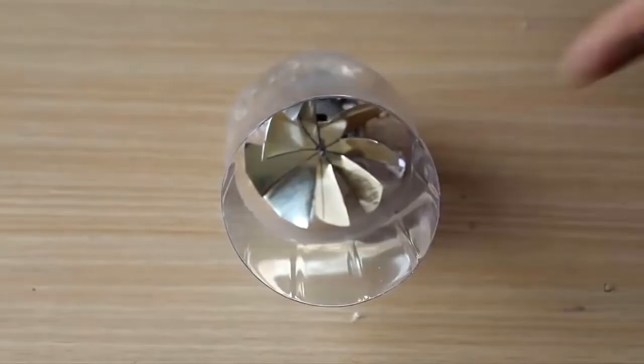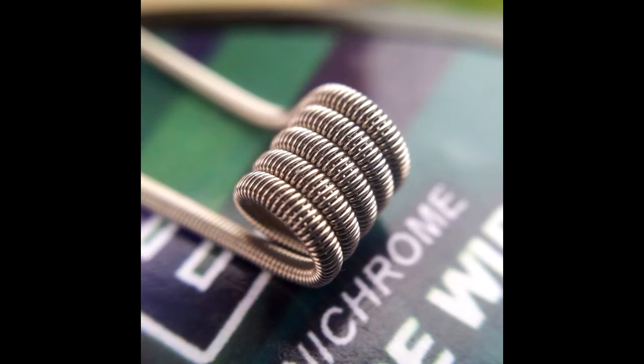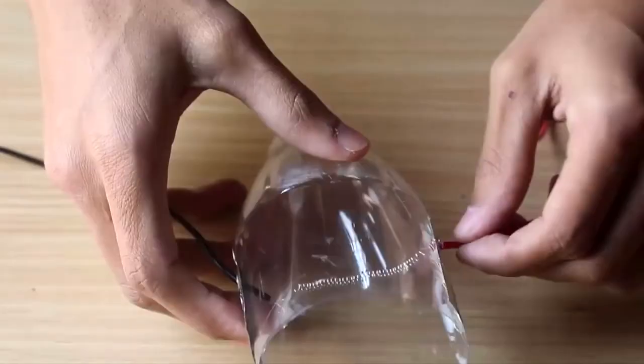To get hot air, he used nichrome wire which has very high resistance and produces a lot of heat. He connected it in front of the fan so that the air takes the heat from the nichrome wire and blows it out.